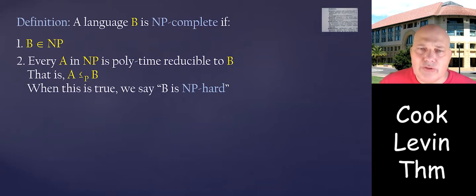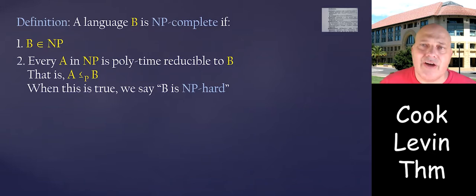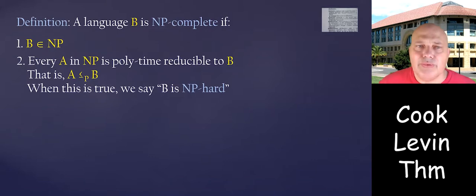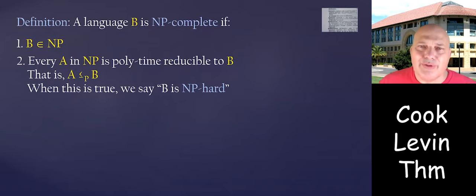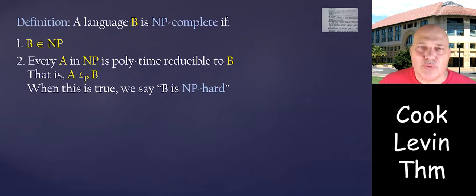This second property is called NP-hardness. We say that B is NP-hard because it is at least as hard as any other problem within NP. So to be NP-complete, you have to be within NP and also NP-hard. Proving that B is in NP is often forgotten when proving NP-completeness on a problem set, so remind yourself of this.